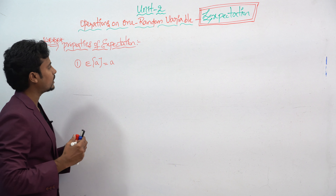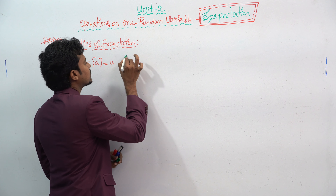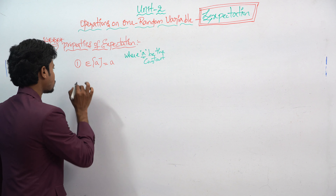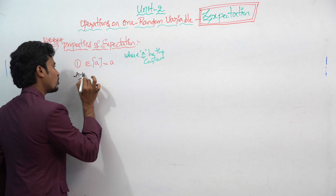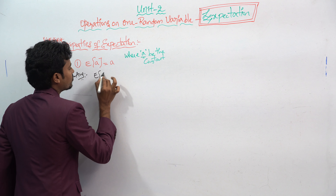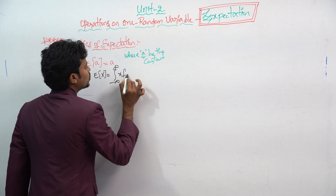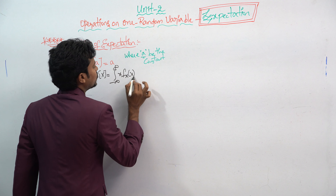Now let's see some simple properties based on the expectation. The first property is: the expectation of a constant is equal to that constant, where a is the constant. We have to prove whether expectation of a constant is equal to the constant or not — that's our target.